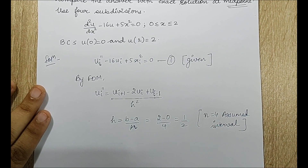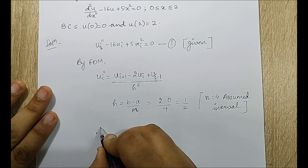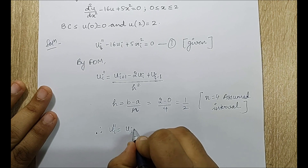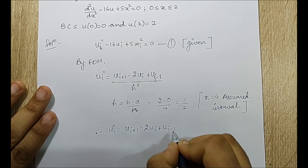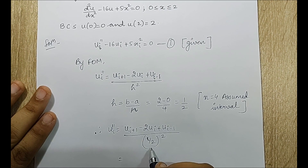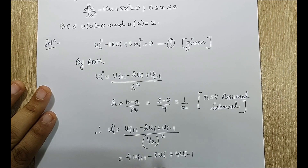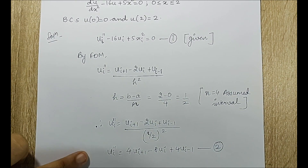Substituting h = 1/2 into the FDM formula: u_i double-dash = (u_{i+1} − 2u_i + u_{i−1}) / (1/2)². Since (1/2)² = 1/4, the 4 goes to the numerator, giving u_i double-dash = 4u_{i+1} − 8u_i + 4u_{i−1}. I mark this as equation 2.